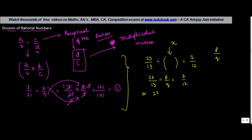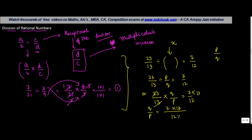Instead of dividing, we put the multiplication sign and reverse the order: 23 upon 13 multiplied by q upon p is equal to 7 upon 12. Rearranging, q upon p is equal to 7 upon 12 multiplied by 13 upon 23. It seems we cannot cancel anything here.